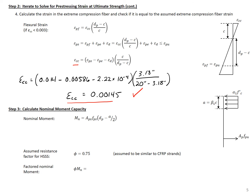Since the strains are equal, we move to step three and calculate our nominal moment capacity. We sum moments about the centroid of our compression block. Our tension steel component is APS times FPS: 0.864 square inches times 250 ksi, times our lever arm, 20 inches minus A over 2 (2.23 divided by 2). This gives us a nominal moment of 4,414 kip-inches.